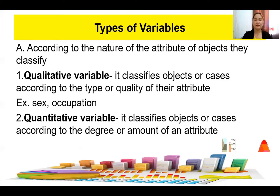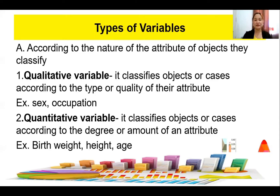For qualitative, it classifies objects or cases according to the type or quality of their attribute. Examples here: sex, occupation. For quantitative variable, it classifies objects or cases according to the degree or amount of an attribute. Examples: birth weight, height, age. You can represent these with numbers — that is quantitative.